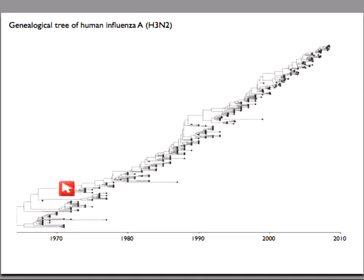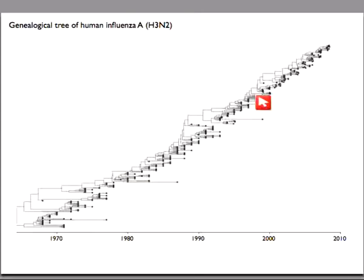What I really like about using trees in this context is that you can see the population genetic process play out. If a mutation appears in 1970 on the trunk of the tree, we have mutation, polymorphism, and then fixation — the mutation appears, it's a polymorphism from 1970 to 1977, and then when the side branches die out in 1977 that mutation becomes fixed forever until that site gets hit again. Alternatively, a mutation on a side branch in 1970 would undergo mutation, polymorphism, and then loss from the population.